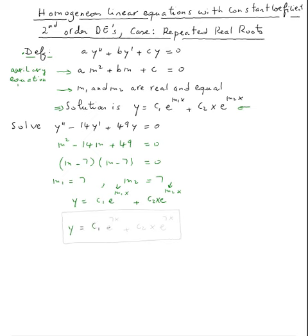So y equals c one e to the seven x plus c two x e to the seven x. And that's it, problem is done. That's it for this example.